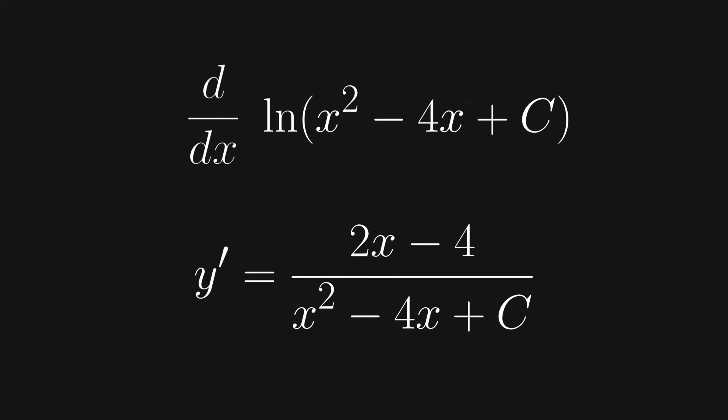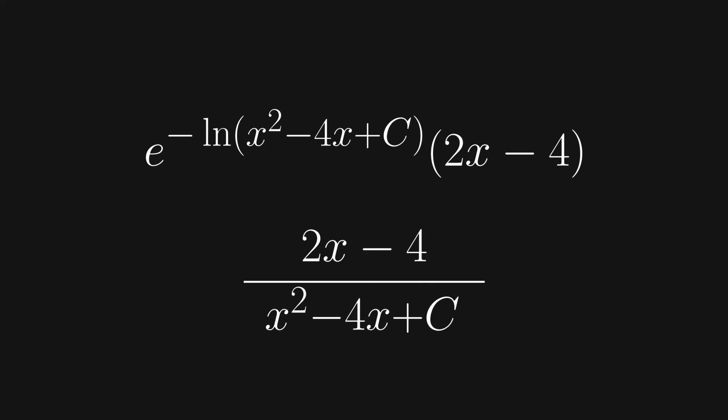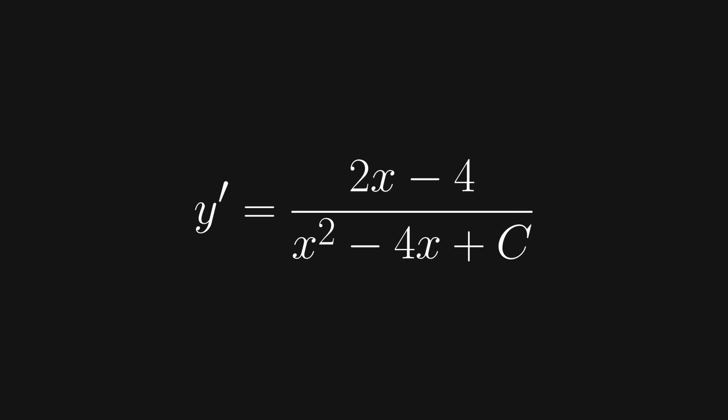This derivative should hopefully be pretty easy, because we just need to use the power rule, and we'll get y' equals 2x minus 4 over x squared minus 4x plus c. Now let's plug this into the right side of the equation. We can simplify the e to the negative natural log, since they'll just cancel each other out. And we're left with 2x minus 4 over x squared minus 4x plus c. As you can see, both sides are equal, so our solution satisfies the equation.